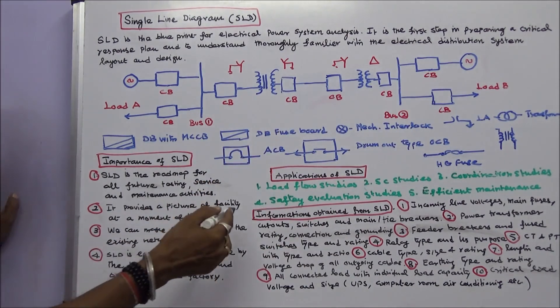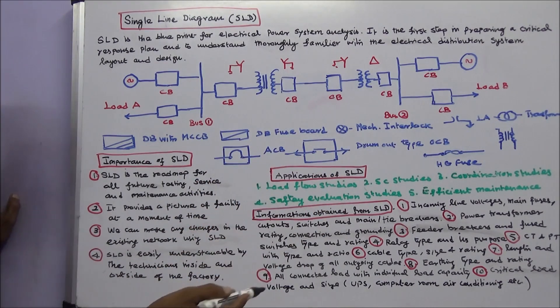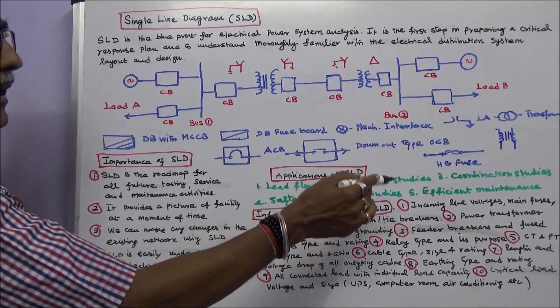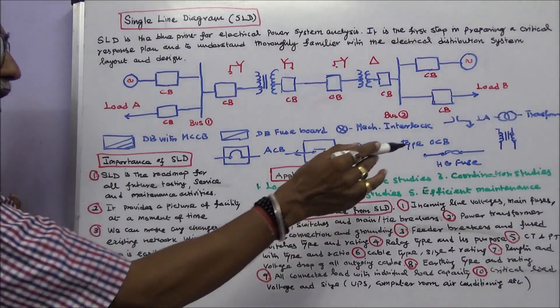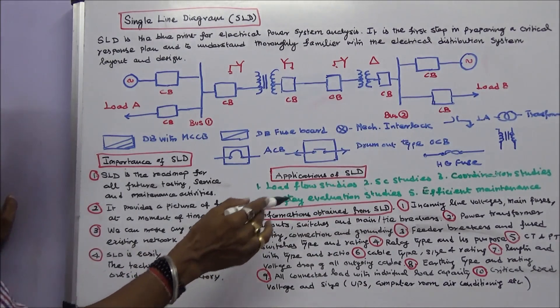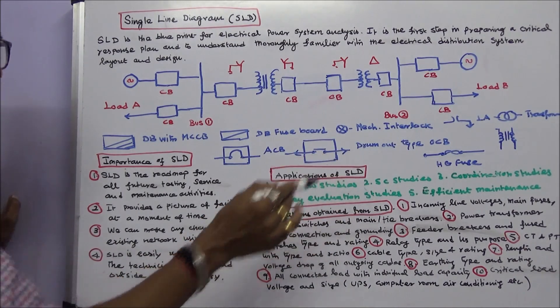Information obtained from the Single Line Diagram: Number one, incoming line voltages, main fuses, cutouts, switches, and main tie breakers.